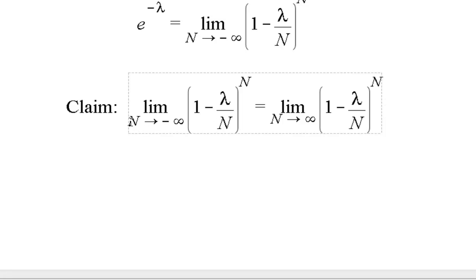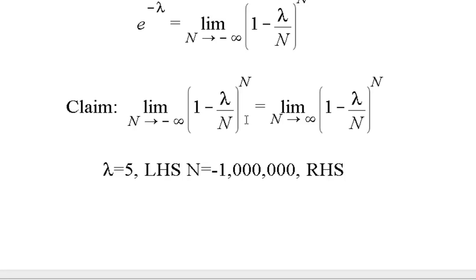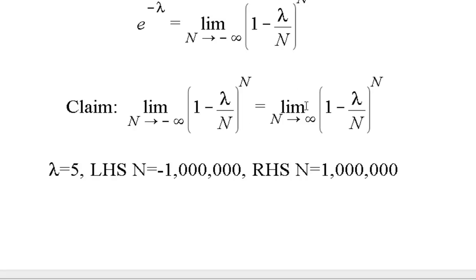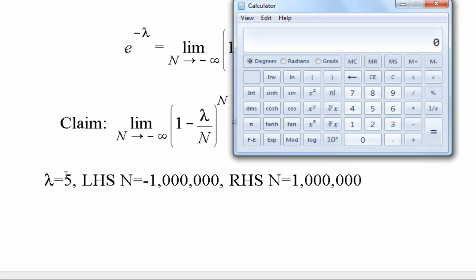And to do that, what I'm going to do is plug in a really negative number and a really positive number. And again, use just a calculator to convince you that these are pretty similar. So I'm going to take lambda and I'll let it equal, let's say, 5. And then I'm going to let the left-hand side N equal, let's say, negative a million. And I'll let the right-hand side N, because on the left-hand side N is approaching negative infinity. On the right-hand side, I'll let N equals positive a million. And what we're going to do is compute this and see if they are indeed the same.